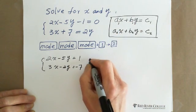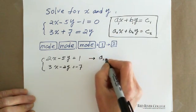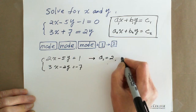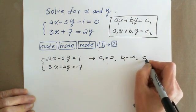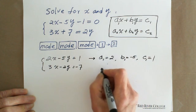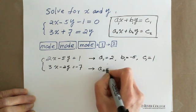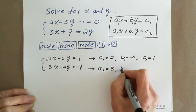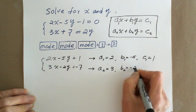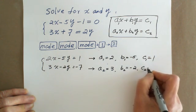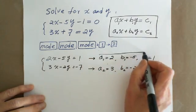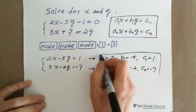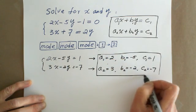Compared with this one, you have A1 equals 2, B1 equals negative 5, C1 equals 1, and A2 equals 3, B2 equals negative 2, and C2 equals negative 7. After you have this one, that's easy. You need to calculate.